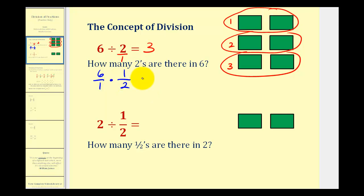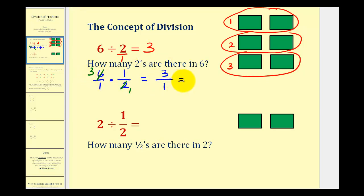Now that we have it in this form, we want to simplify if possible. Notice how the two and the six share a common factor of two — there is one two in two, and three twos in six. So now we can multiply: three times one is three, one times one is one, and of course the result is three, the same as our quotient.